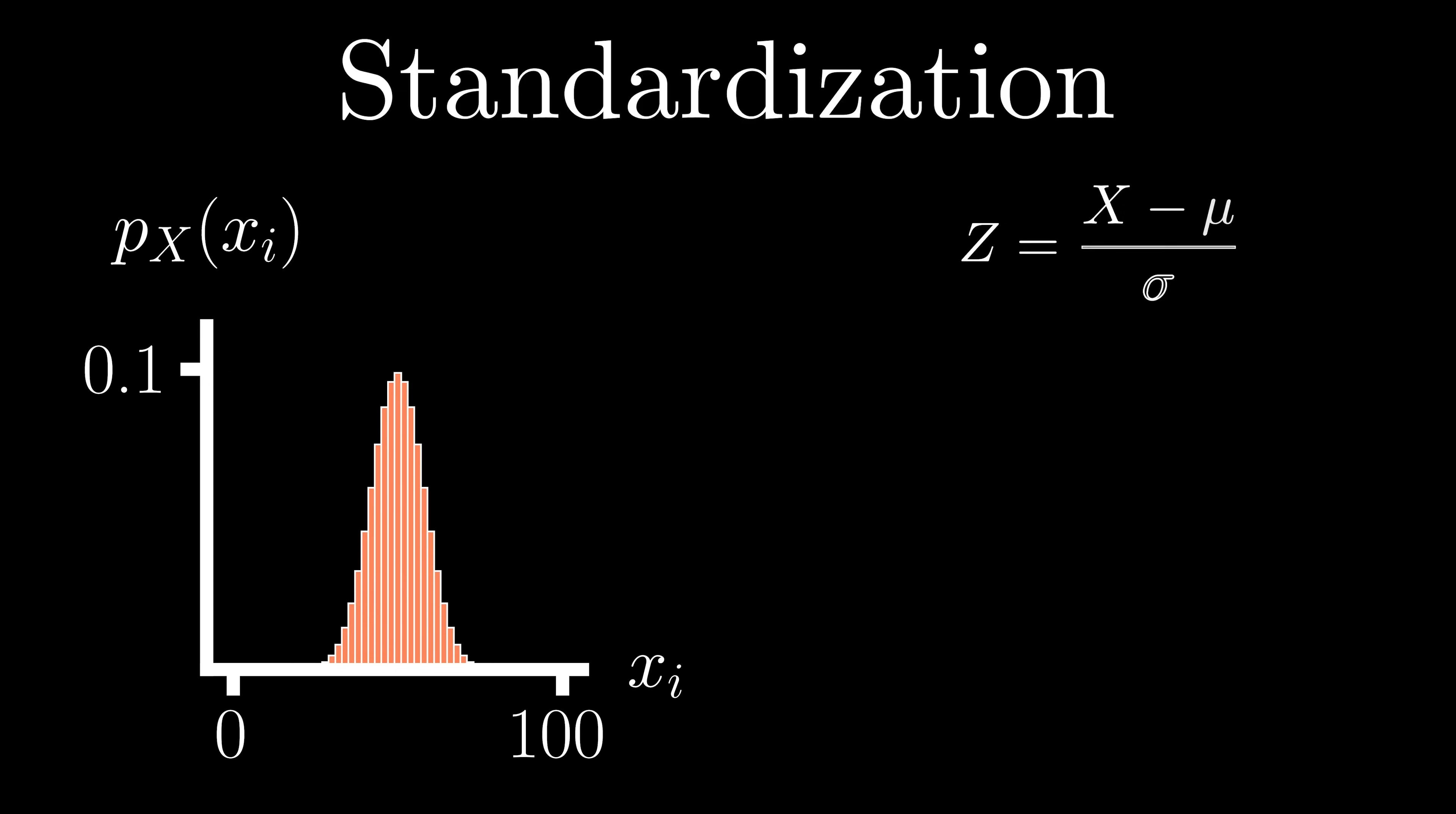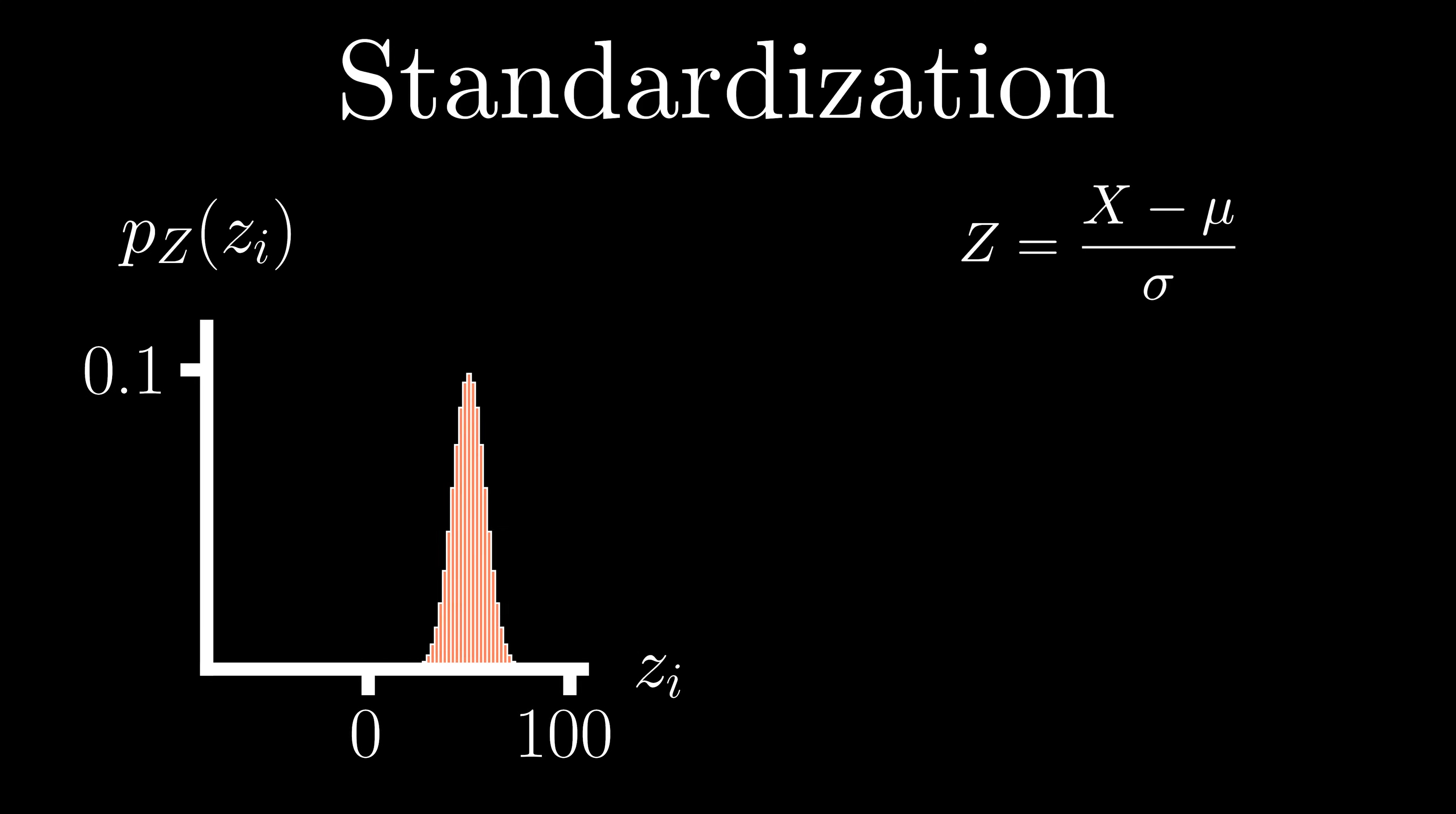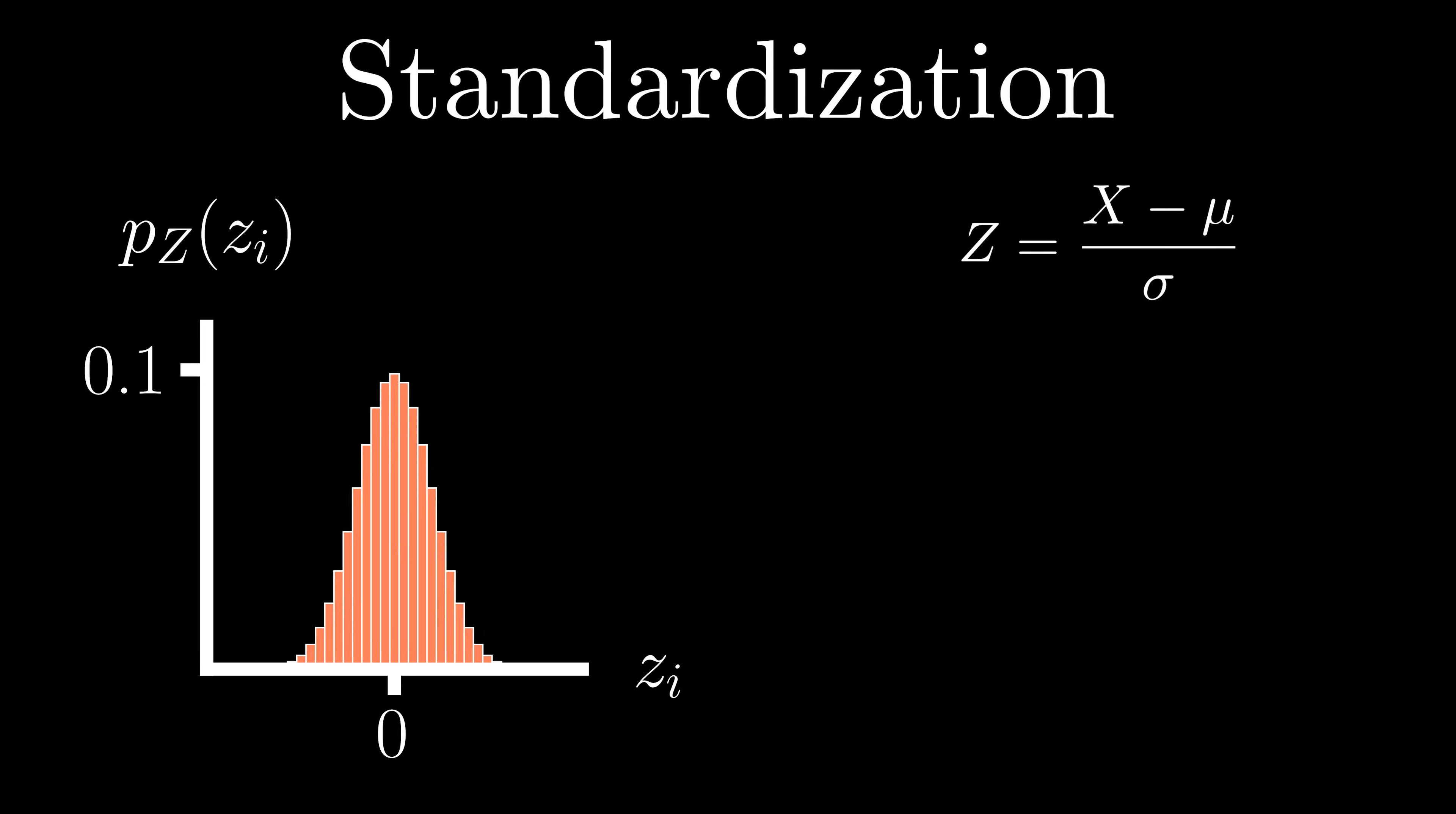Let's take one of our random variables X from earlier, but now transform it into a new variable Z. We'll do this by, for each outcome, subtracting off our mean for X, and then dividing by its standard deviation. Let's see this in action by first expanding our x-axis from earlier. We can now subtract off our mean for X for each outcome, shifting our distribution to the left, and now we can divide by our standard deviation. It's a bit hard to see our new distribution, so let's zoom in a bit. By taking off our mean, we have centered our distribution around zero, and by dividing by its standard deviation, we have altered its overall spread.